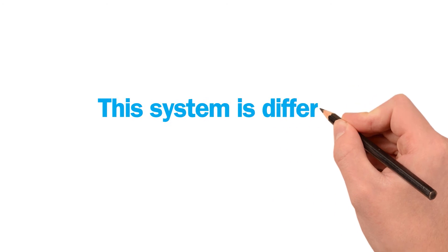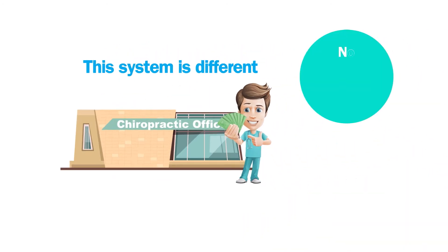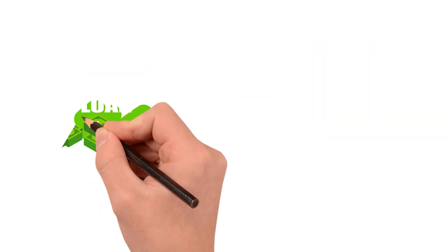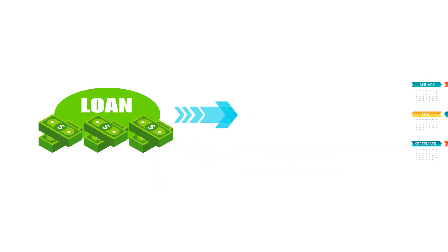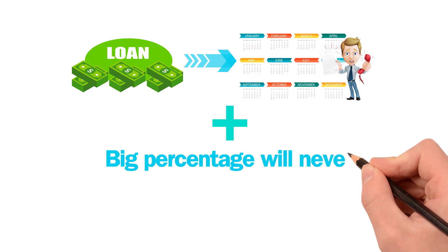This system is different. It allows buyers to get in for little money down with no extensive qualification process and third-party lenders. Small business loans can take months of processing and a big percentage will never get approved.